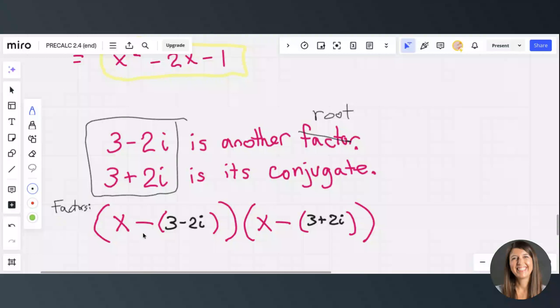So I've got x minus 3 minus 2i, and then x minus 3 plus 2i. So 3 minus 2i, 3 plus 2i.